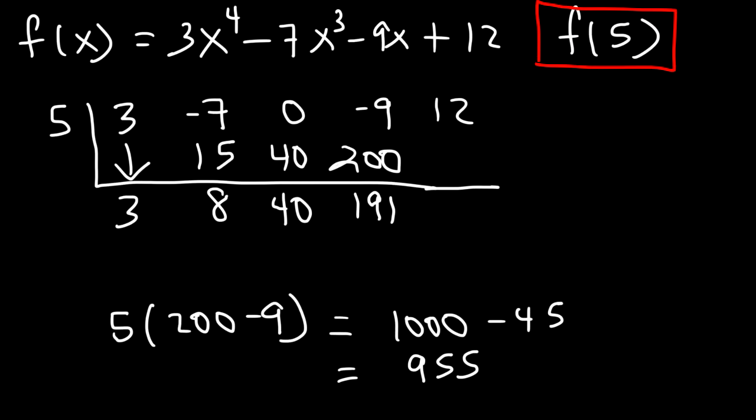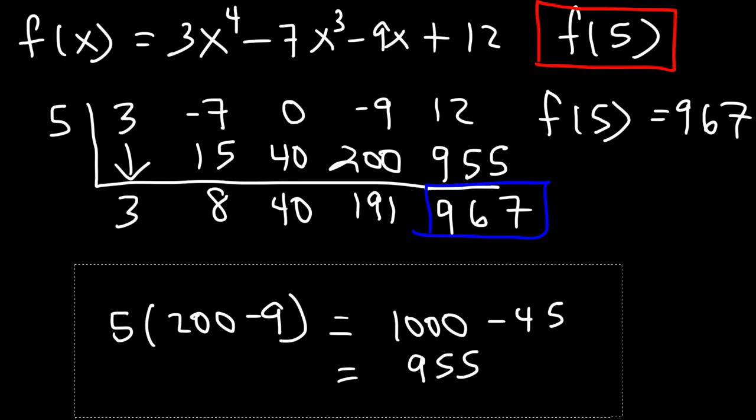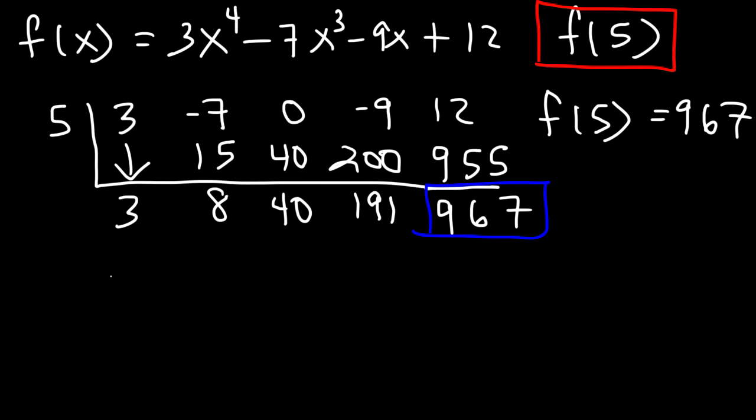And let's check that with the calculator just to be on the safe side. And that is 955. And then 12 plus 955, that's 967. So this is the remainder. Therefore, f of 5 should equal 967. Now let's confirm that answer by evaluating the function when x is 5.